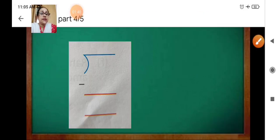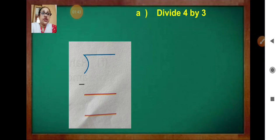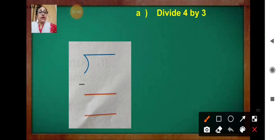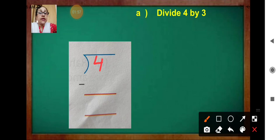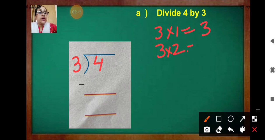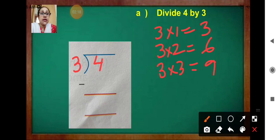Now let's do this by our division method. Divide four by three. Write four here — it is the dividend. And three is the divisor. Now, you have to say the multiplication table of three: three ones are three, three twos are six, three threes are nine. We are not getting four anywhere in the tables.